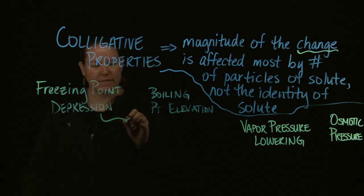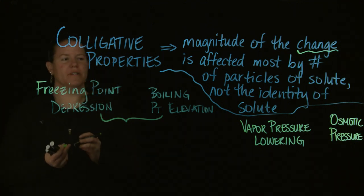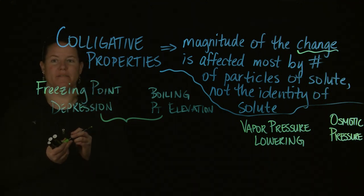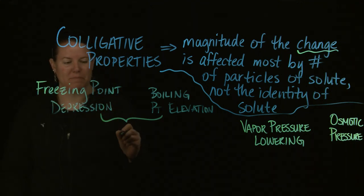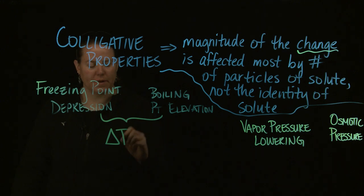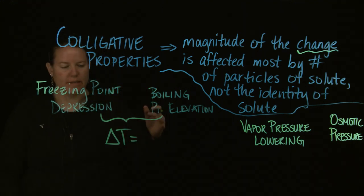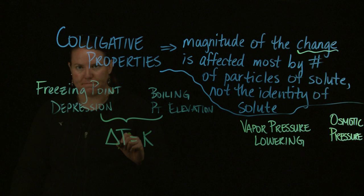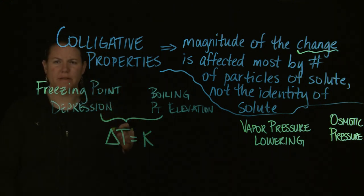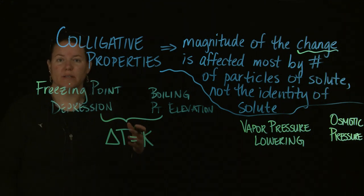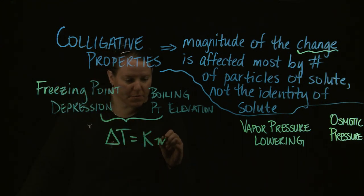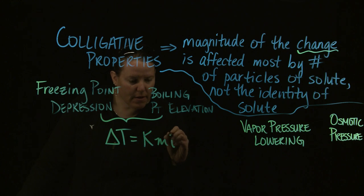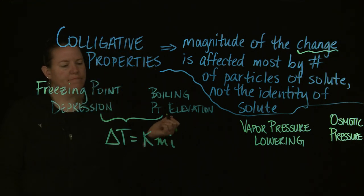Freezing point depression and boiling point elevation have the same basic formula. The change in temperature is going to be equal to some constant — that constant is different based off of what solvent you're using, it's a constant associated with the solvent — times the molality, times i.